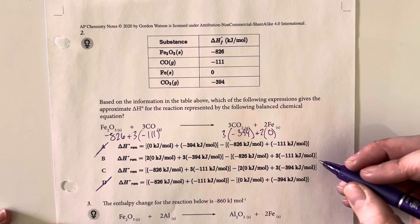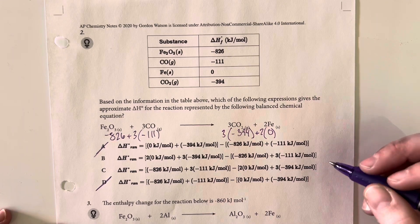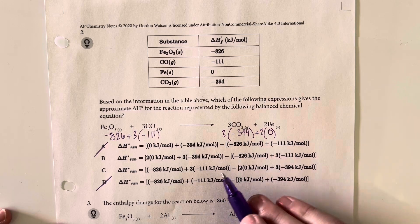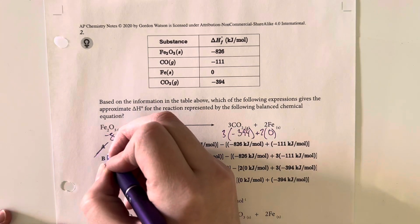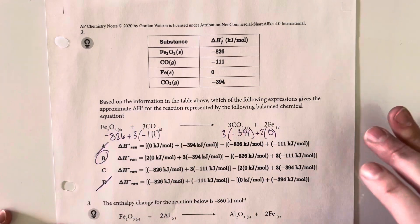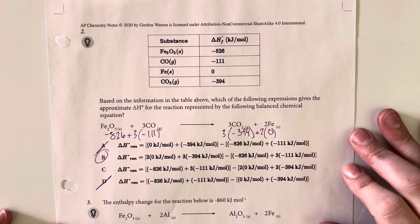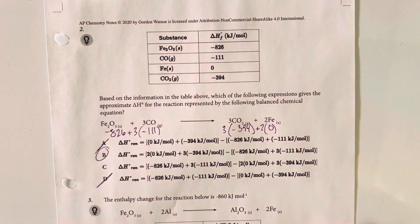I can also eliminate option D for the same reason. The difference between option B and C is that B is products minus reactants and C is reactants minus products. We are dealing with products minus reactants, so option choice B is my answer.